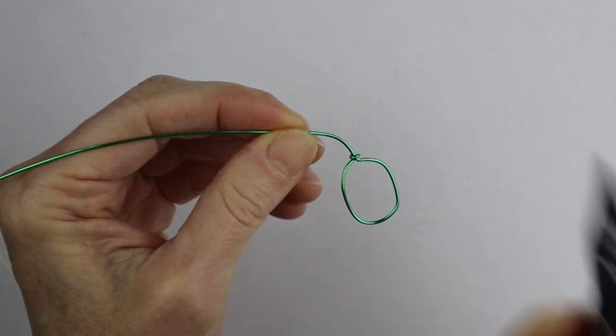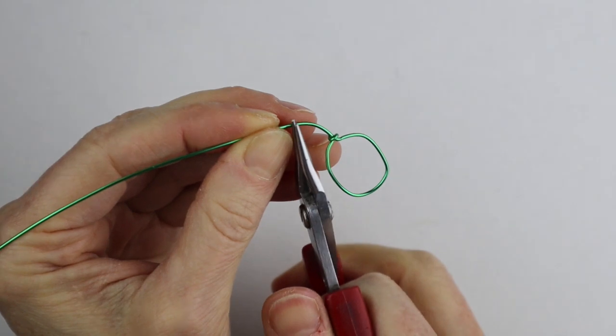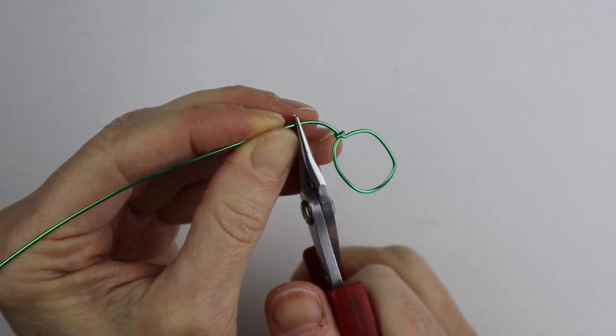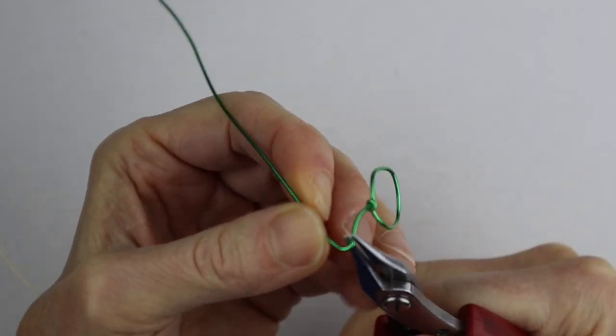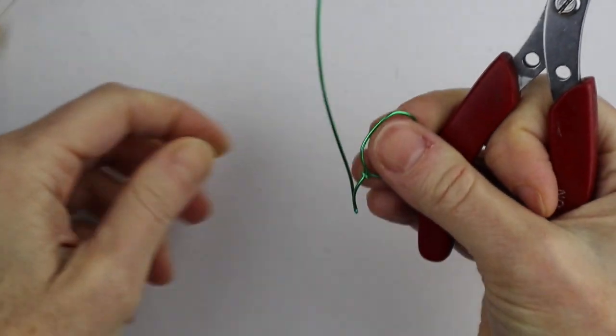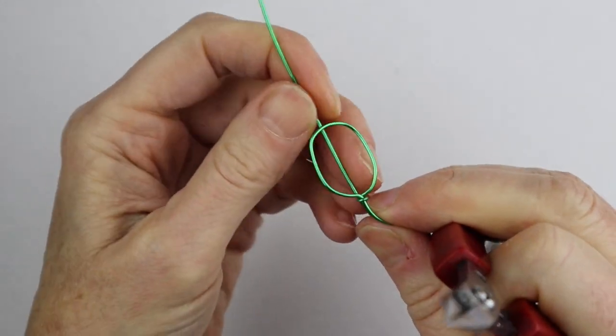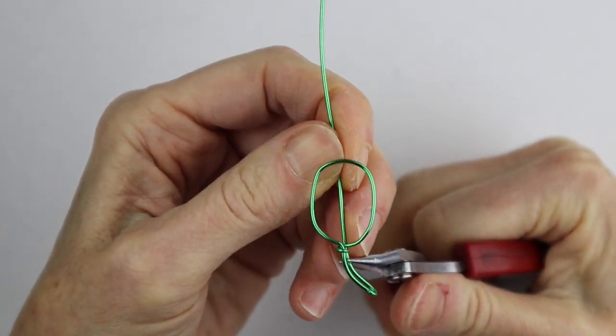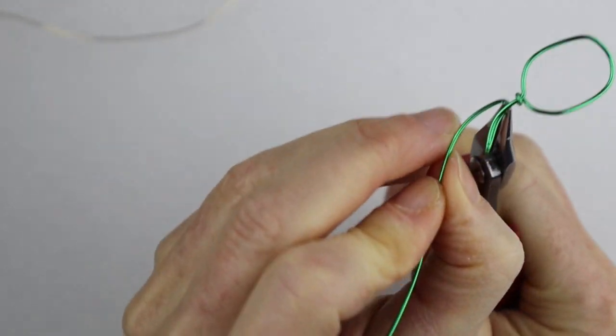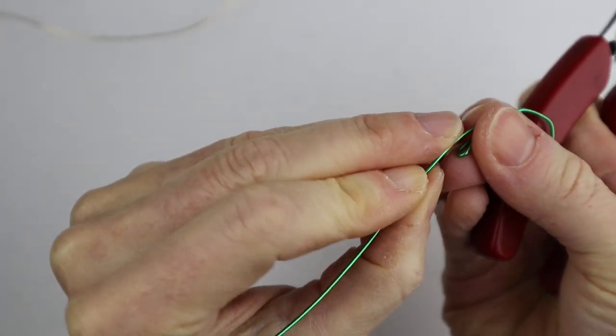What you can do is actually form your leaves at the top. You can do a measurement on your pliers if you want to get them both the same size. Basically what I'm going to do is bend it back and forth.